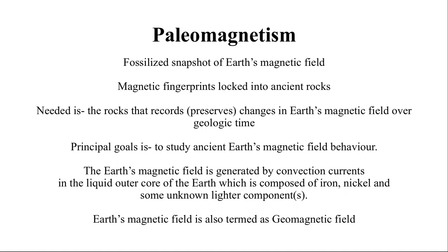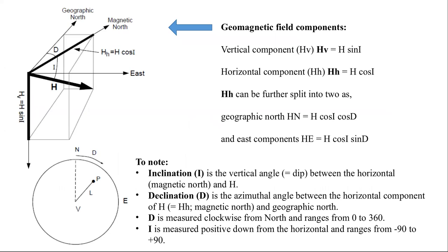The principal goal of any paleomagnetic study is to study ancient Earth's magnetic field behavior and its nature with geological time. The Earth's magnetic field is generated by convection currents in the liquid outer core, which is composed of iron, nickel, and some unknown lighter components. The continuous convection currents in the liquid outer core result in Earth's magnetic field.